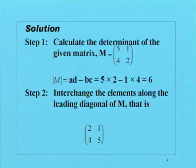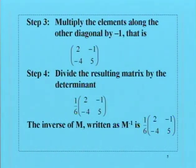The next step is to interchange the elements along the leading diagonal of M. That is (2, 1, 4, 5). Notice the leading diagonal of M has 5 and 2, so we interchange. The 2 will go to the top and the 5 will come to the bottom.